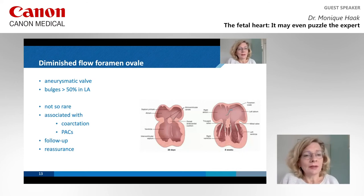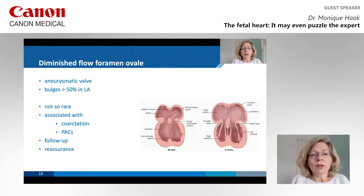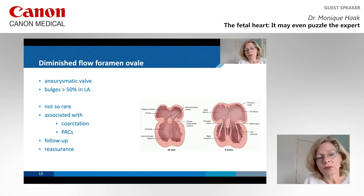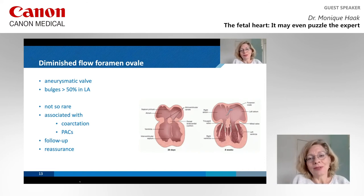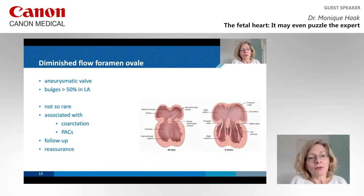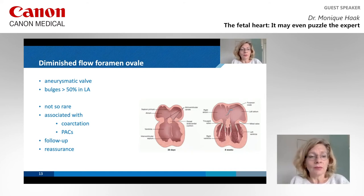This finding is not so rare — its prevalence reported in literature varies, but is between one and five percent. It is associated with coarctation, so it is wise to follow up these children. Also, premature atrial contractions may develop — we think the aneurysmatic flap irritates the atria. So follow-up is needed, but first of all, I think there is room to reassure the parents, because in most cases this is a very benign finding.